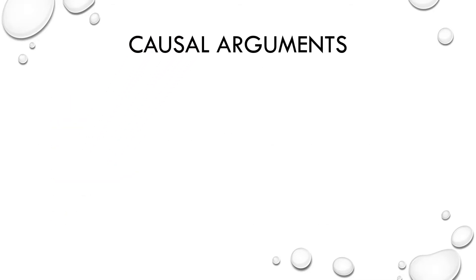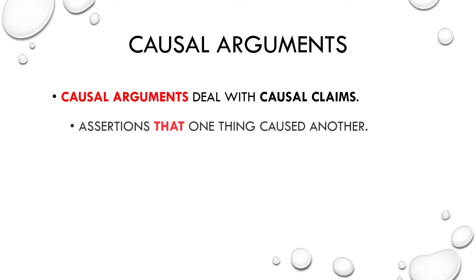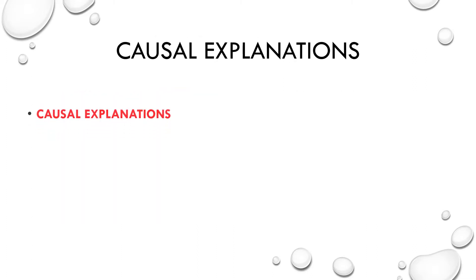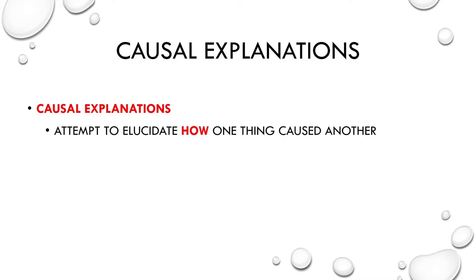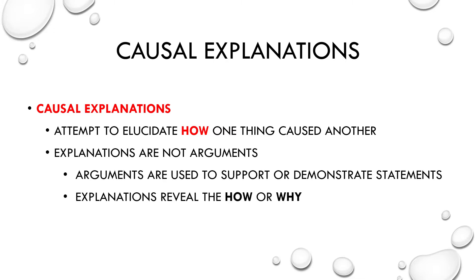Since one way of looking at science is as a search for causes, let's distinguish causal arguments from causal explanations. Causal arguments deal with causal claims — they're attempts to provide support for an assertion or conclusion that one thing caused another thing to happen. They're persuasive; like all arguments, they're meant to show that something is true. Causal explanations, on the other hand, attempt to elucidate how one thing caused another. They're not arguments. Arguments are used to support or demonstrate propositions and claims, while explanations reveal the how or the why.